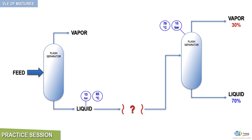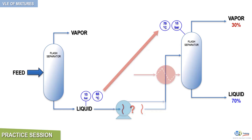The liquid mixture is available at the bottom of the first flash unit at 13 bars and 65 degrees Celsius. Therefore, we need to pass it through a heater in order to raise its temperature to 79 degrees Celsius, as that is the required operating temperature of the second flash unit. This operation involves a heat exchanger, but also a liquid mover type of equipment such as a centrifugal pump. A pump is needed to convey the liquid from the first flash unit to the heat exchanger, and then to the second flash unit, as depicted in this process arrangement.